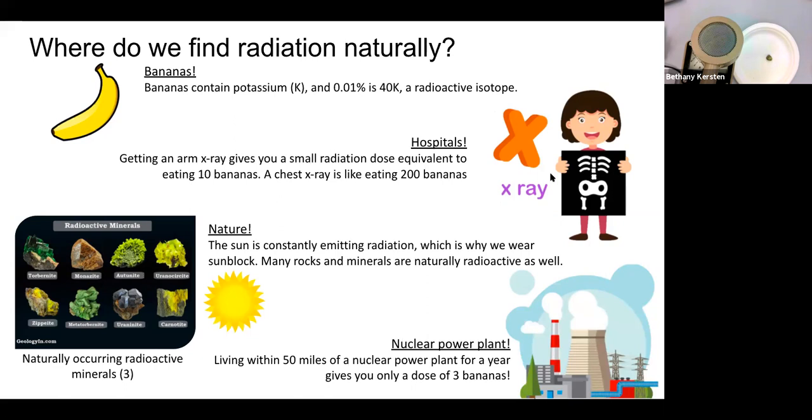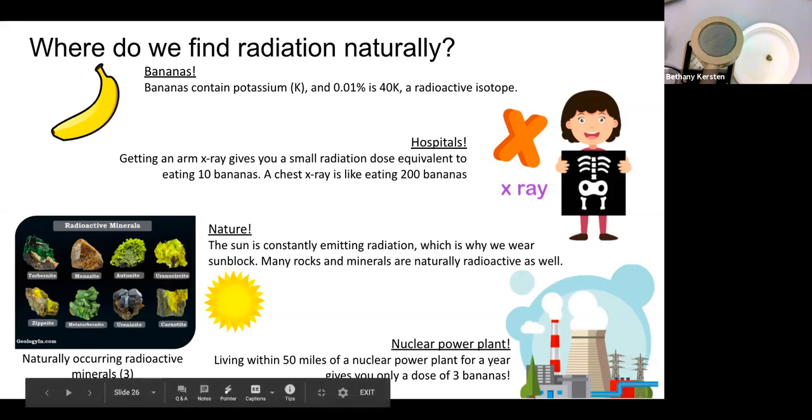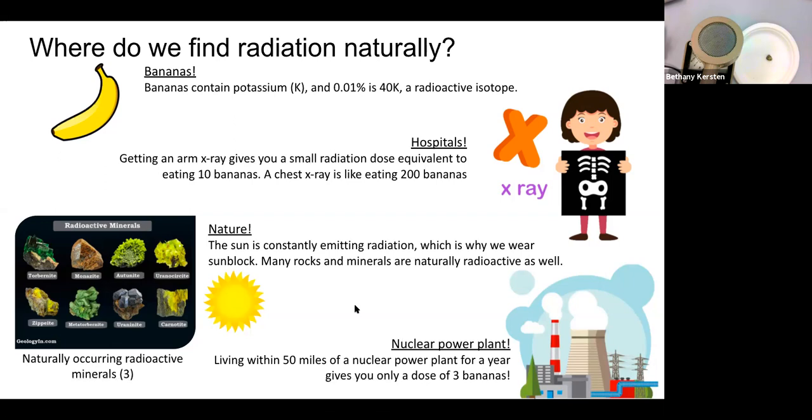And the one that we worked with today is the uraninite, which is on the bottom row of the radioactive minerals. And so it actually has uranium in it, which is also used to power nuclear power plants. Yeah, and fun fact, living by a nuclear power plant is the same as eating three bananas. And that's over a year. So that's not bad at all. So, after that, do you have any more questions about radiation?